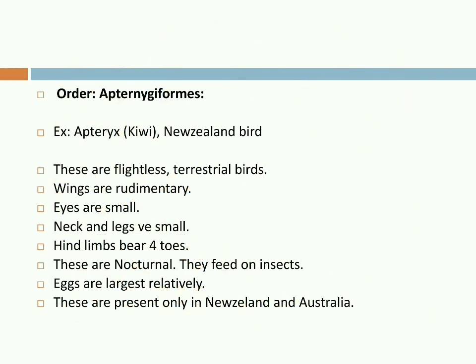Apterygiformes: Kiwi is the well-known example — the national bird of New Zealand. It is the smallest flightless bird, with a long beak. Head and eyes are small. Legs have four toes, one directed to the back side. They are gregarious and nocturnal. They live in mountains and meadows. They can lay three eggs at a time; usually males incubate them. Scientific name: Apteryx — the Kiwi, national bird of New Zealand.